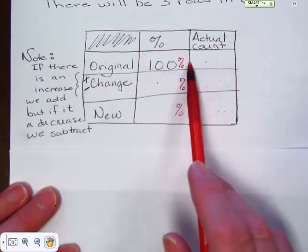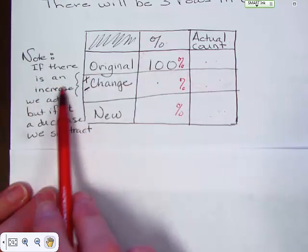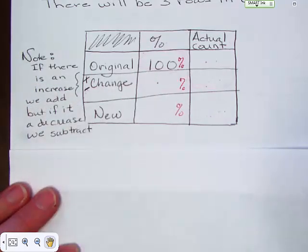You would have the actual starting amount minus a total or the actual starting amount plus a total. If it's an increase we add. If it's a decrease we subtract.